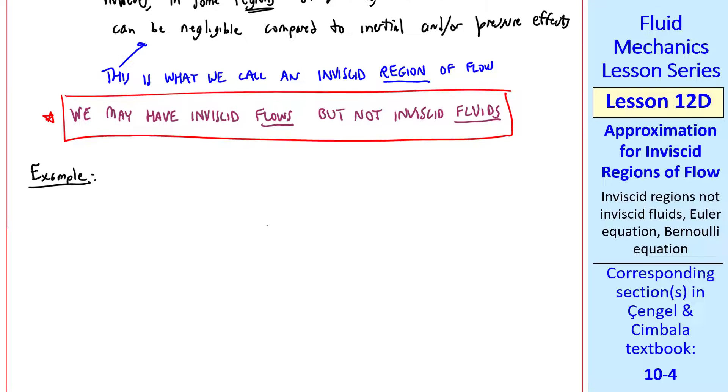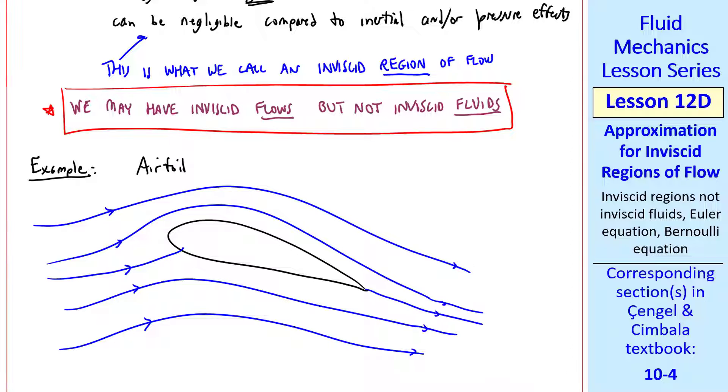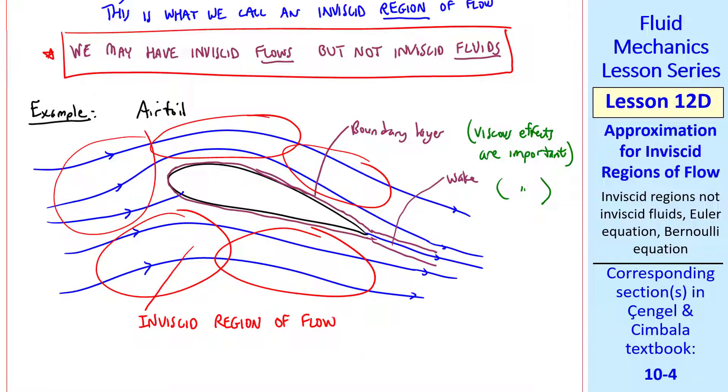Here's an example of where you might find inviscid regions of flow. Here's an airfoil at some angle of attack. I sketched some streamlines. Because of the no-slip condition, there will be a thin region near the wall where viscous effects are very important. And this extends typically into the wake as well. This region near the wall is called a boundary layer. Viscous effects here are important and cannot be neglected. The same thing is true in the wake. But anywhere else, outside the boundary layer and the wake, all around this airfoil, we can treat this as an inviscid region of flow.